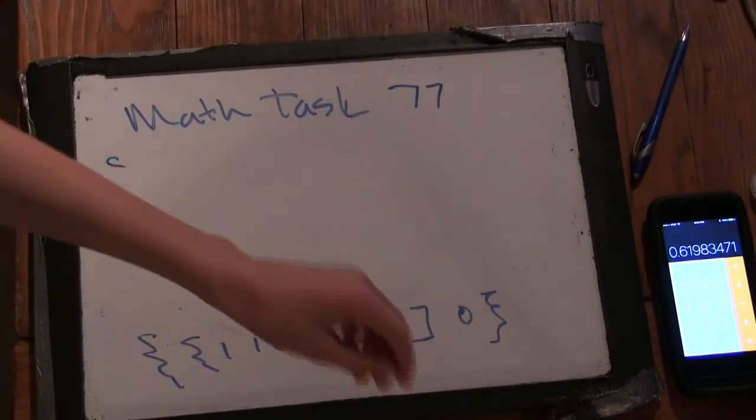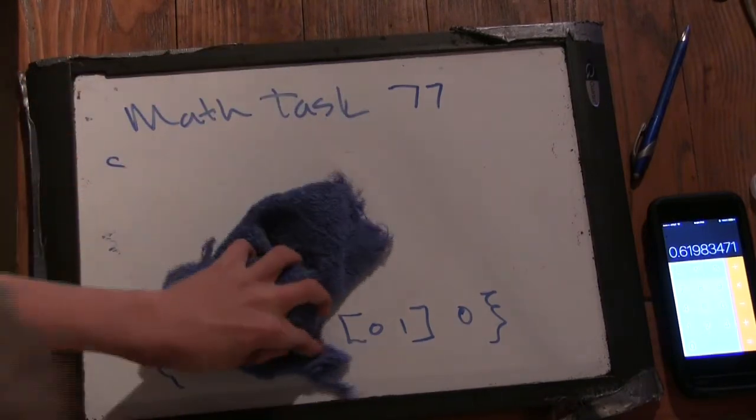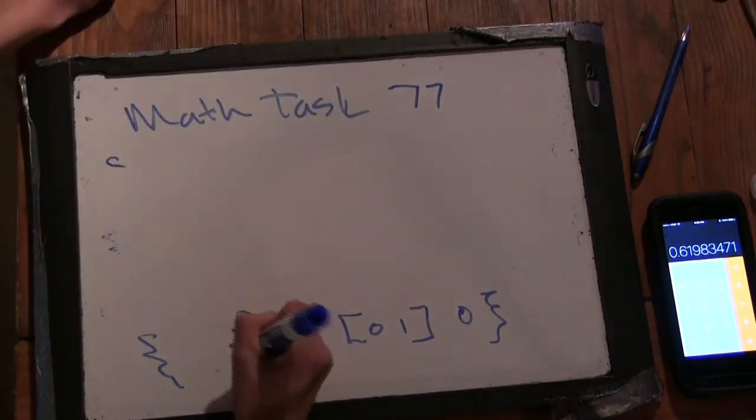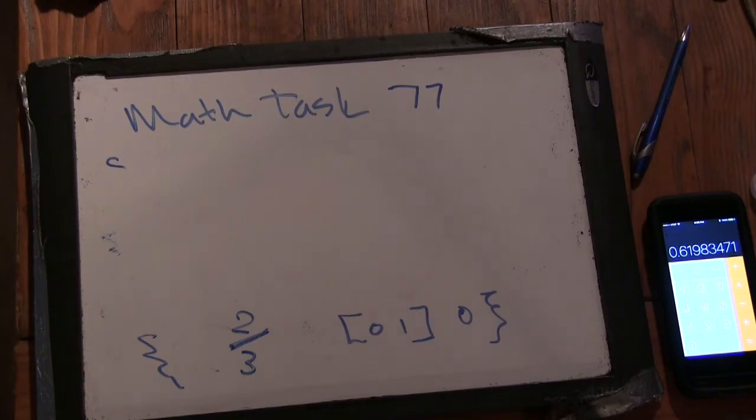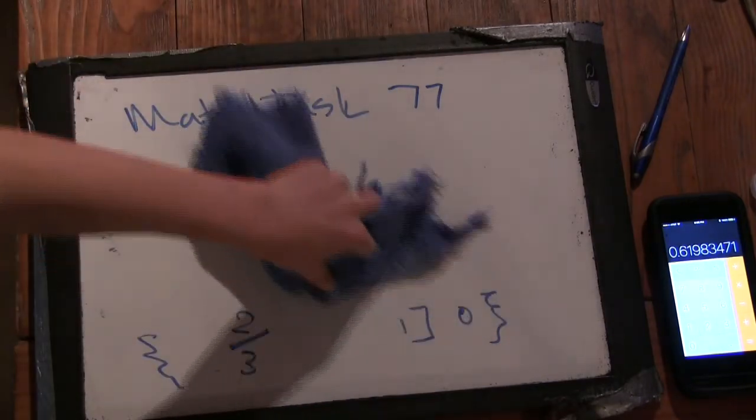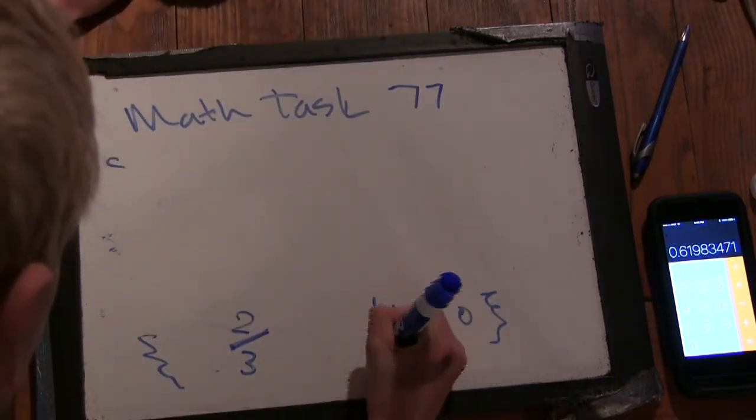This becomes 2 thirds. Okay. So the next one... 0 and 1... 1 divided by 2. This becomes 1 half.